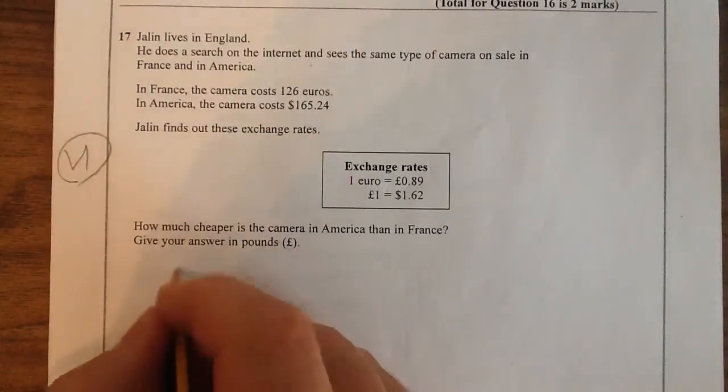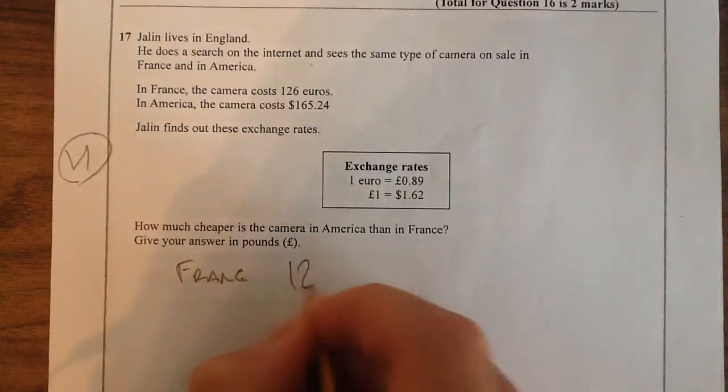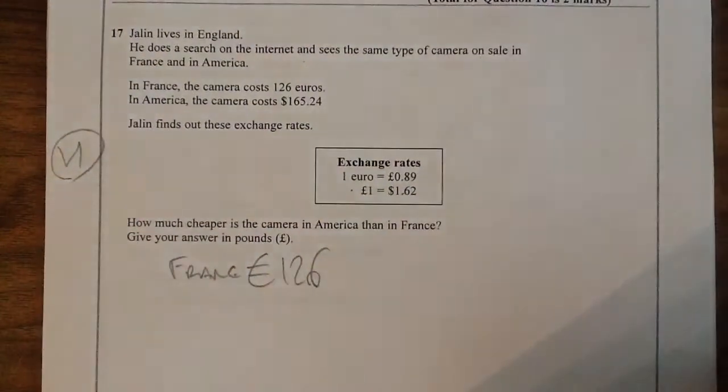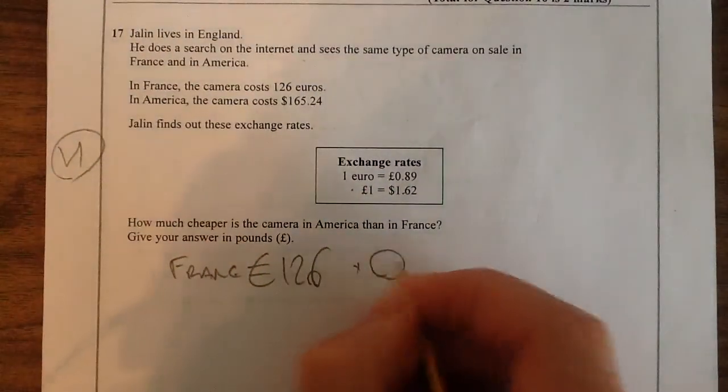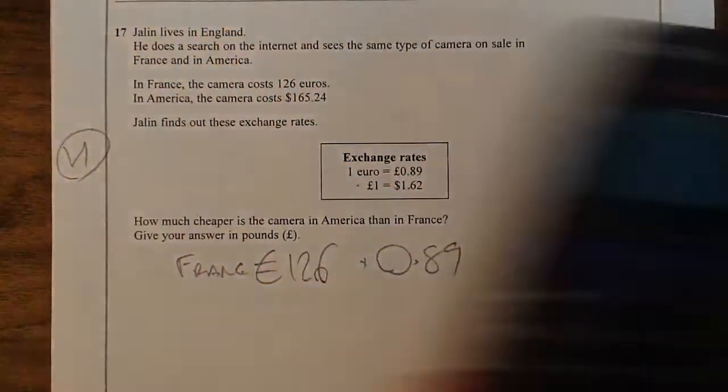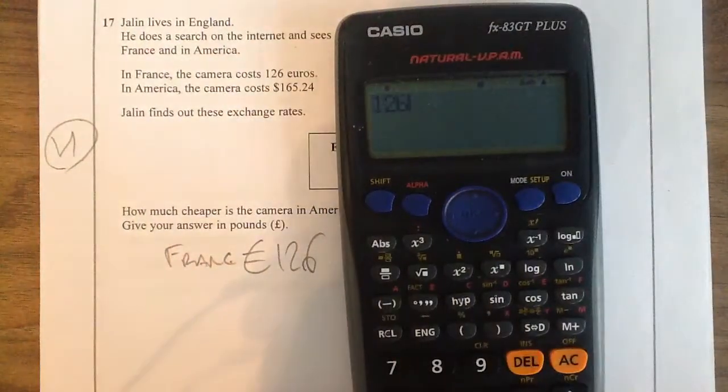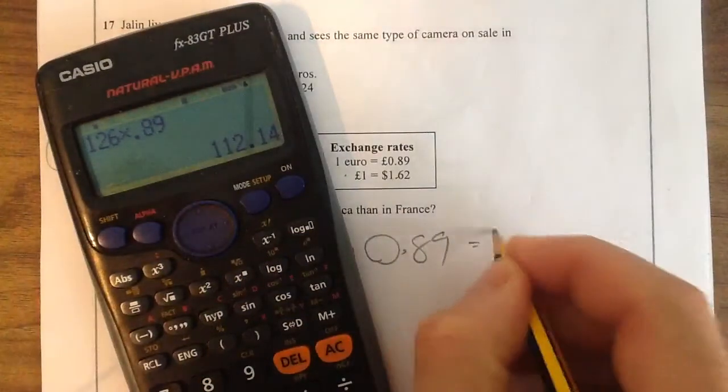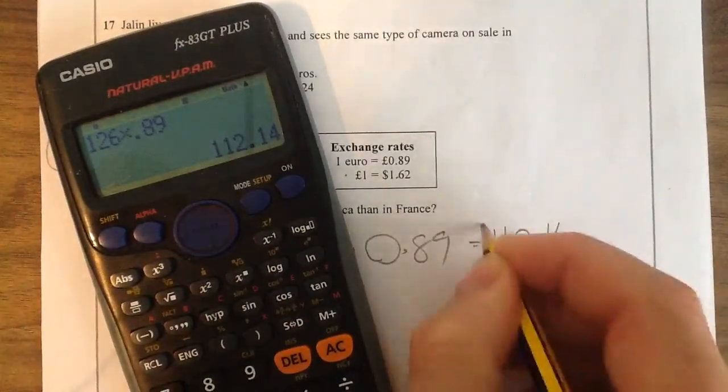So in France it's 126 euros. One euro equals £0.89. So to get this to pounds, we have to multiply this by 0.89. 126 times 0.89 equals £112.14.